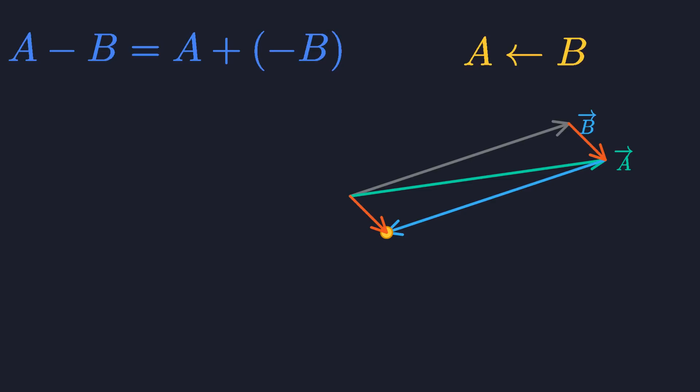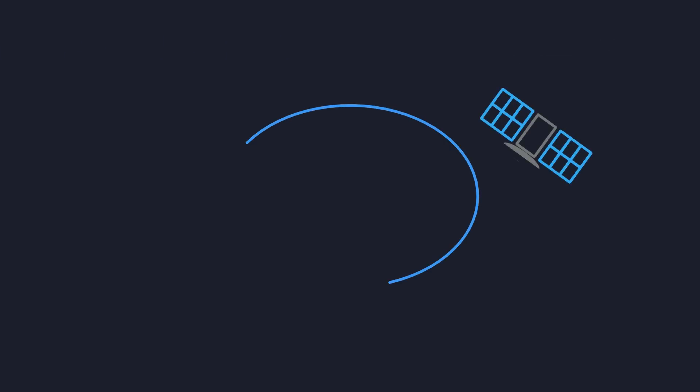Vector subtraction is a key ingredient of calculus, because it allows us to calculate derivatives. Say you have a satellite orbiting the earth. You want to know how fast it's going at a specific point. So you first pick an origin, let's say all the way down here.